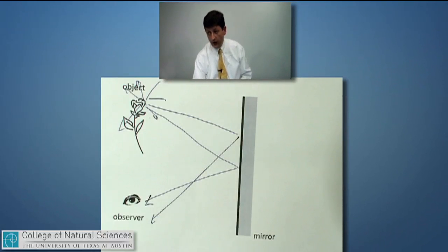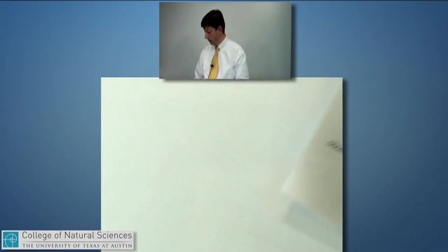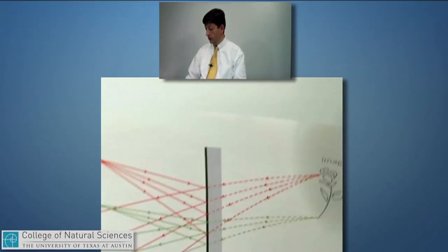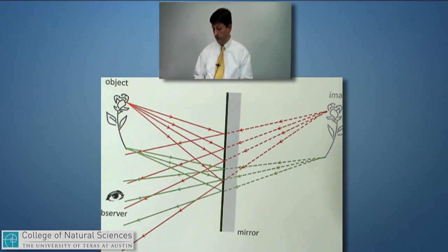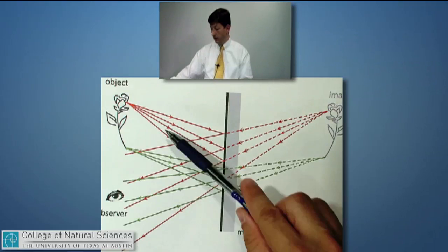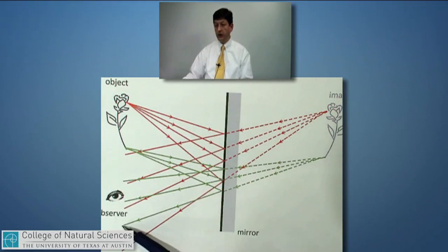And if we were to continue that process of just drawing light rays emitted from the object and then reflected at equal angles, the picture we would draw would look something like this. That light is coming in, reflecting at the same angle going out. Light is coming in, reflected at the same angle going out.